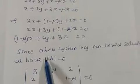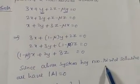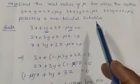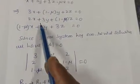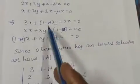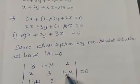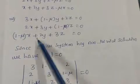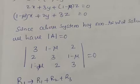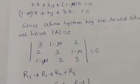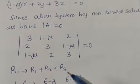Since the system has a non-trivial solution, the determinant of the coefficient matrix must equal 0. The coefficient matrix is: first row [3, (1 minus mu), 2]; second row [2, 3, (1 minus mu)]; third row [(1 minus mu), 2, 3], and its determinant equals 0. To simplify, we use row operations.